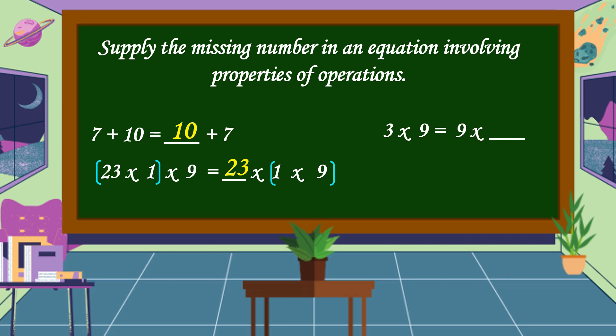Next equation: 3 times 9 is equal to 9 times blank. The missing number is 3. This is the commutative property of multiplication. Next equation: 12 times blank is equal to 1. The missing number is 1. This is the identity property of multiplication.